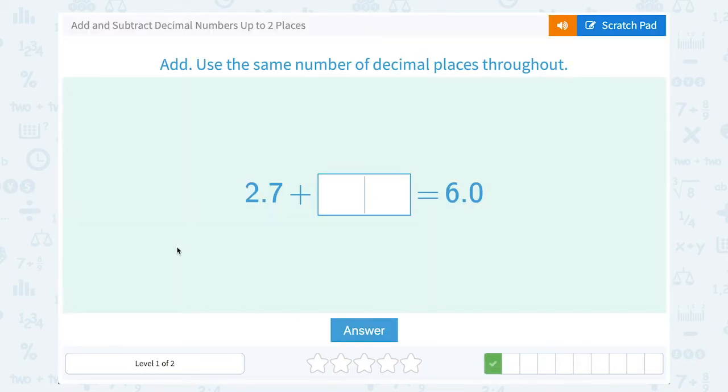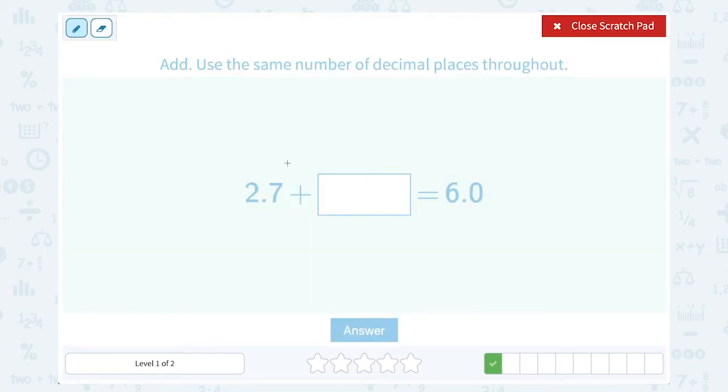2.7 plus some number is equal to 6.0. Well, again, if we know some number was added to 2.7 to give us 6.0, we can work backwards and say 6.0 minus 2.7, and see what that leaves us with for the missing number.